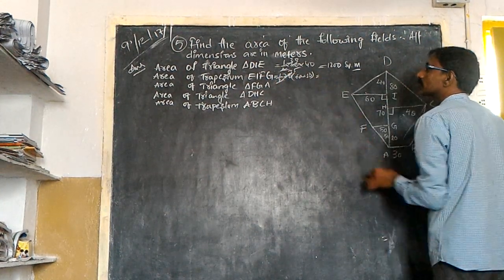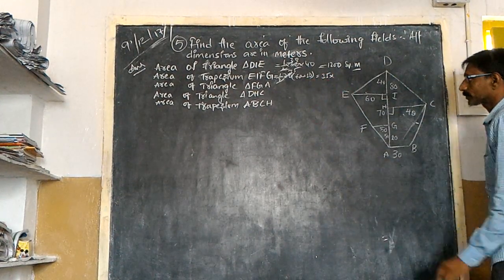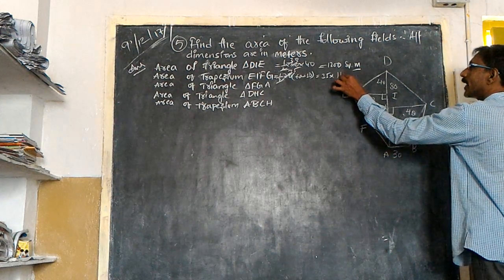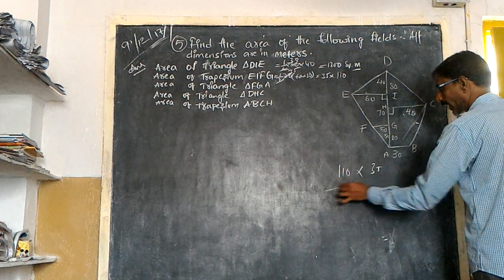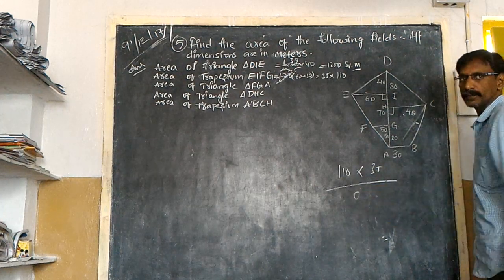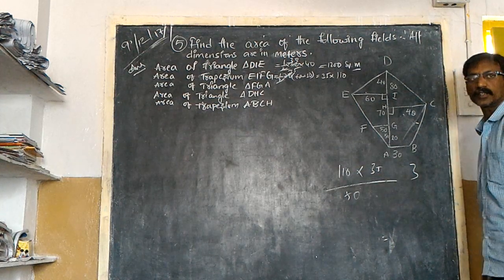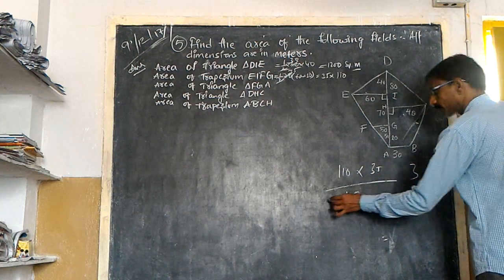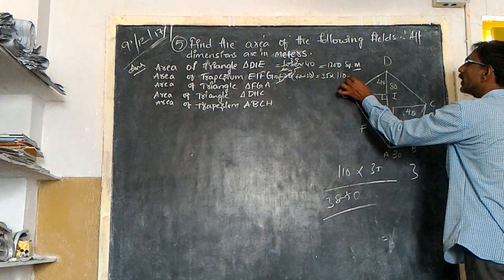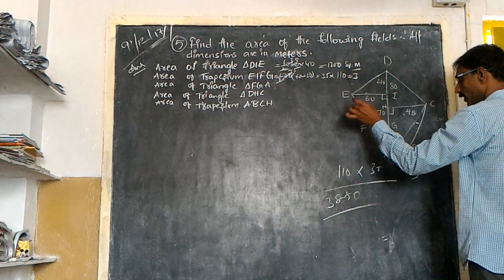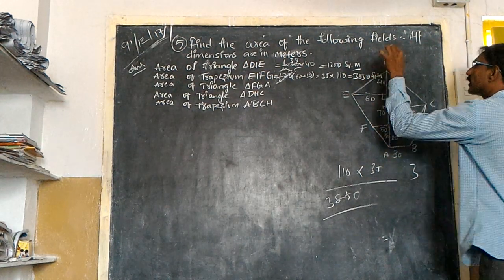60 plus 50, that is equal to 110. How many times? 35 times. 35 into 110. 35 zeroes are 35, 35 ones are 35. So 3850 square meters.